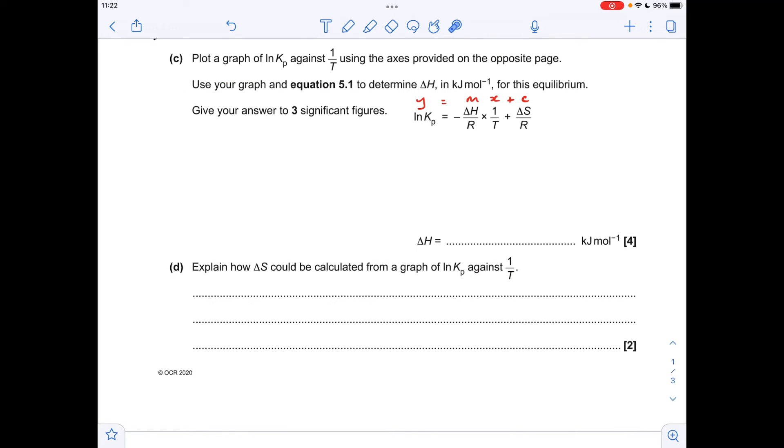So moving on to part C now, we've got to plot this graph which I'll show you in a second. Just a reminder that the equation is in the form of y equals mx plus c. So that's why they're asking us to plot ln of Kp, so that's the y against 1 over T because that's the x. So the gradient is going to be equal to minus delta H over R and from the gradient we'll be able to calculate the enthalpy change.